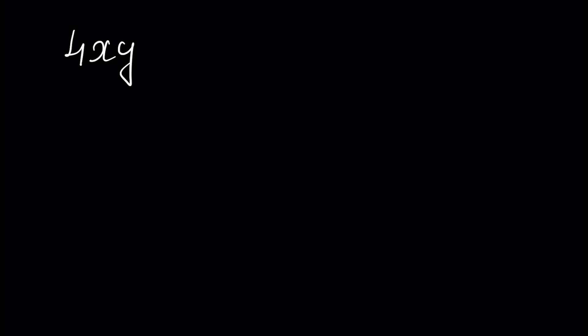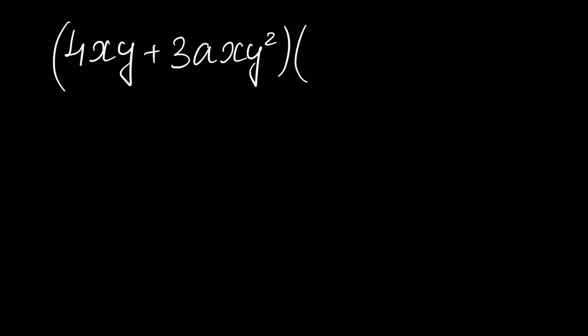The next example: assume we have 4xy plus 3axy squared, and this polynomial is multiplied by the next polynomial: minus 2ax squared plus 5y cubed.